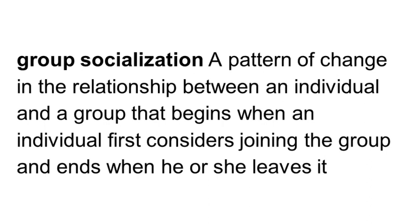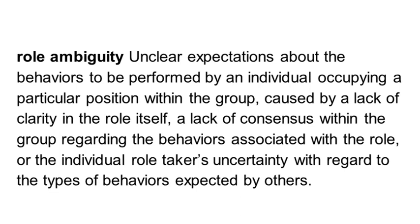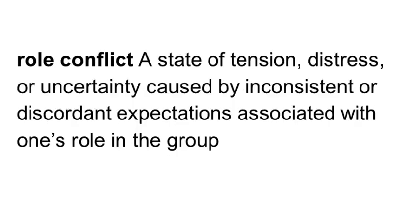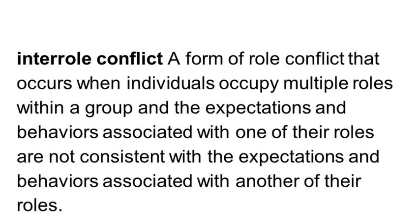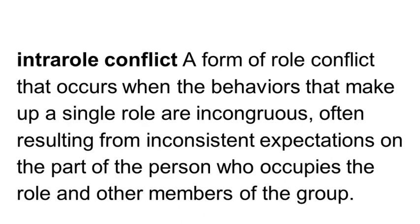Role ambiguity occurs when the behaviors associated with a role are poorly defined. Role conflict occurs when group members occupy two or more roles that call for incompatible behaviors — what we call inter-role conflict — or when the demands of a single role are contradictory, which is intra-role conflict. When role fit is low, members do not feel that they match the demands of their roles.